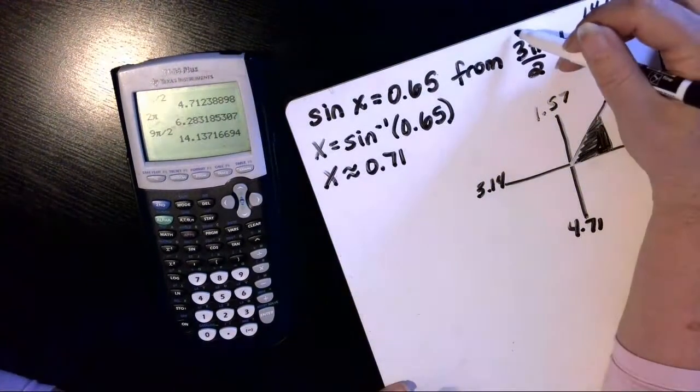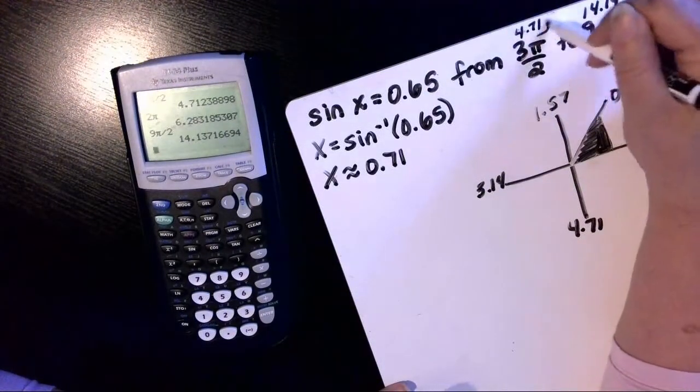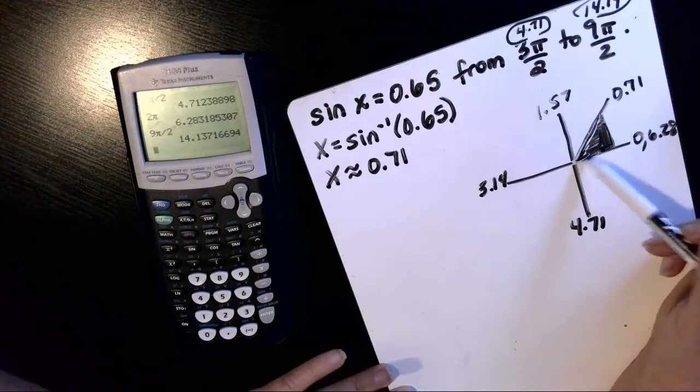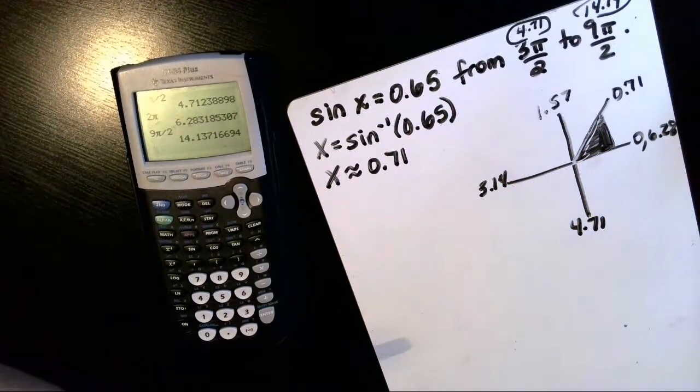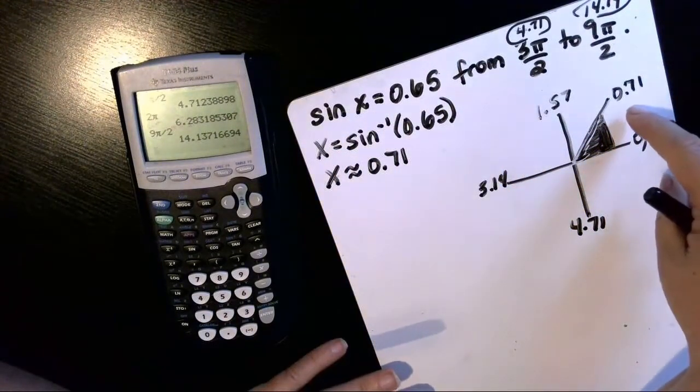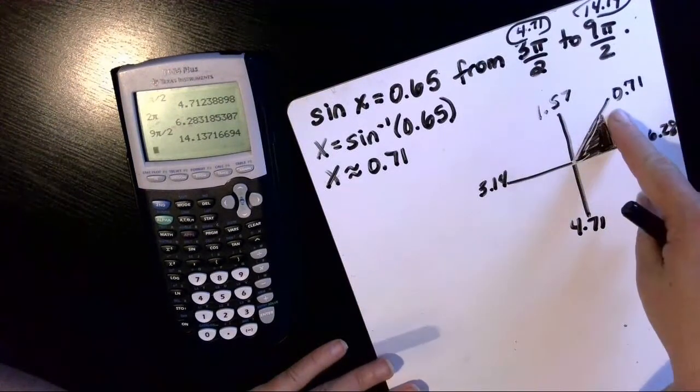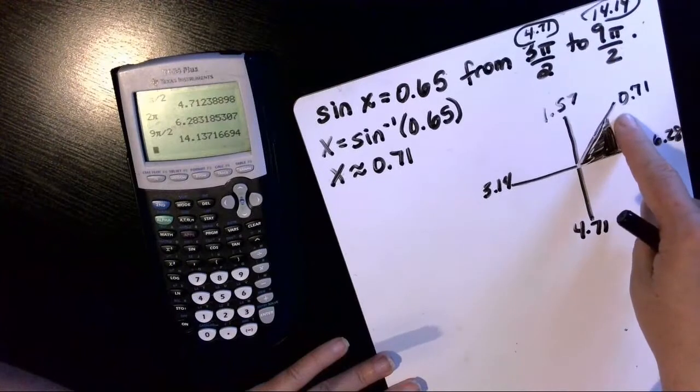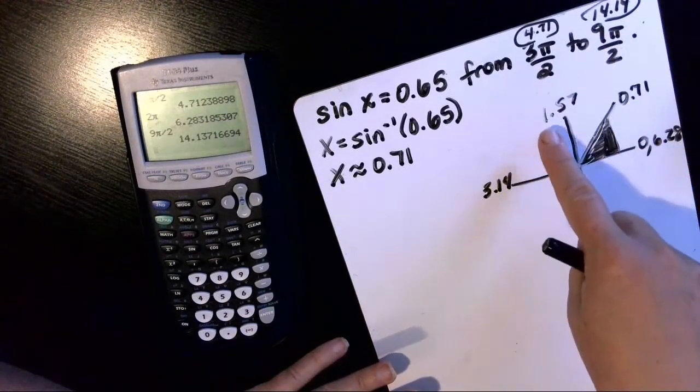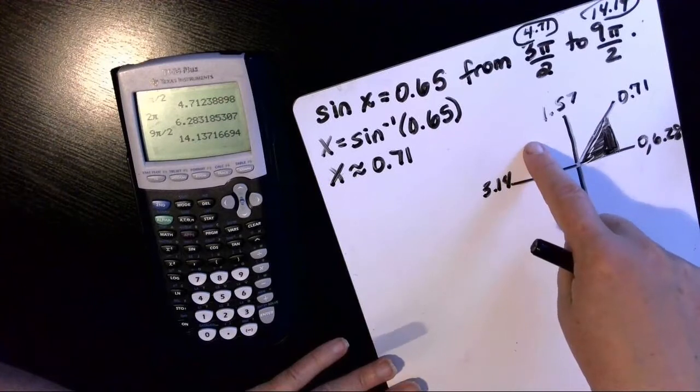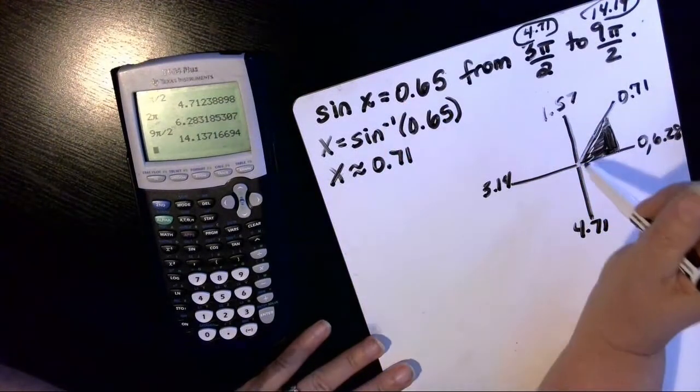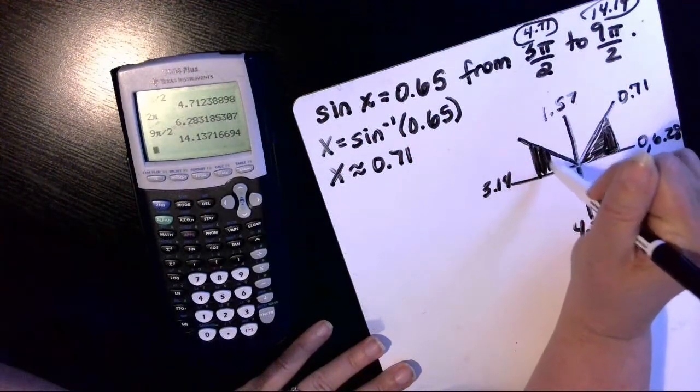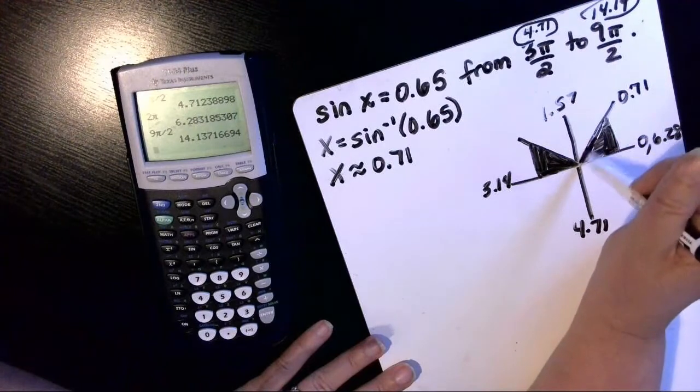So we want to find values between 4.71 and 14.14. And they have to give us a positive 0.65 here for the sine. So if we remember the quadrants, all students take calculus. All, that's all of the trig functions are positive in quadrant 1. Students, sine is positive in quadrant 2, and we have a positive sine here. So our second answer would be in quadrant 2, where sine is also positive.